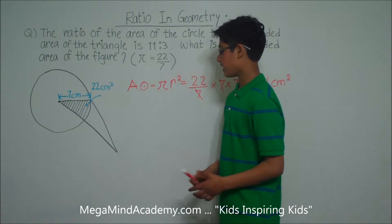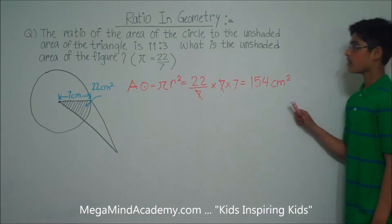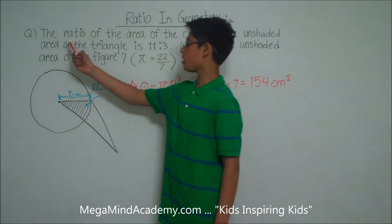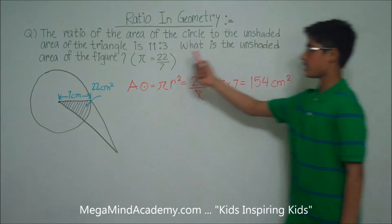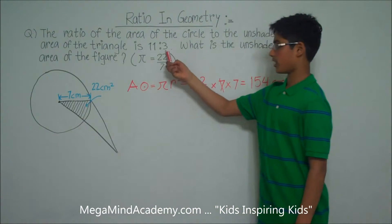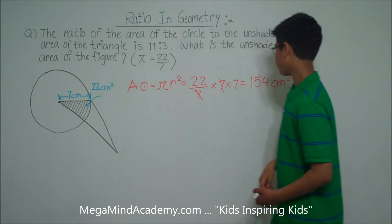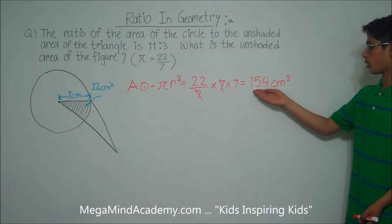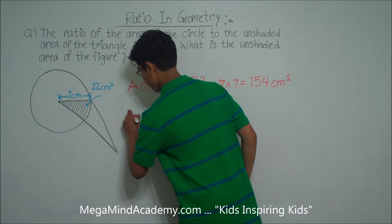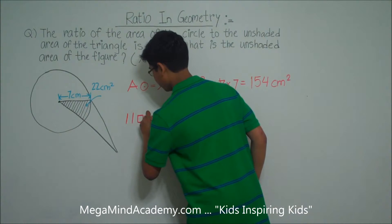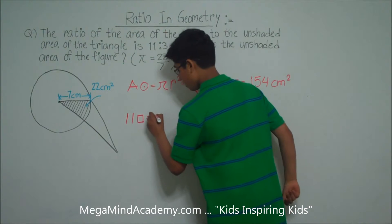So this means that the area of the circle is equal to 154 centimeters squared. This also means that 11 units are equal to 154 centimeters squared, because the problem states that the ratio of the area of the circle to the unshaded area of the triangle is 11 to 3. So the area of the circle corresponds to 11 units, and 11 units are equal to 154.